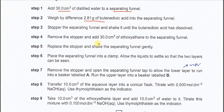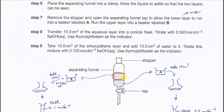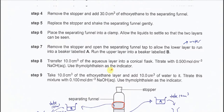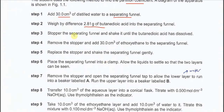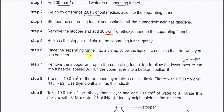After dissolving the butanedioic acid in water, the organic solvent is added to the liquid solution and the funnel is shaken again. In step 4, the stopper is removed and 30 cm³ of ethoxyethane is added to the same funnel. After that, shake the separating funnel again. In step 6, place the separating funnel in the clamp and allow the liquid to settle so two layers become visible.